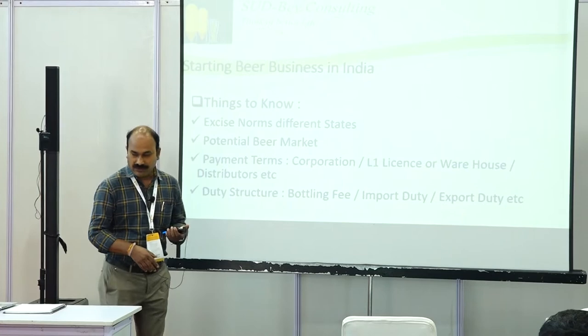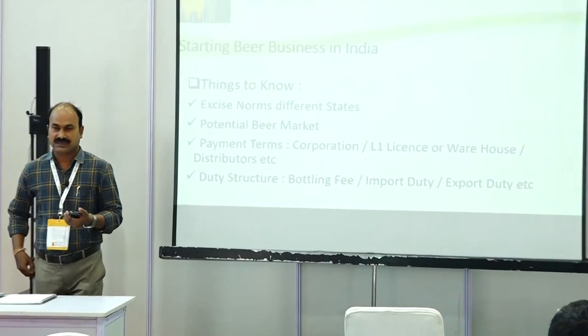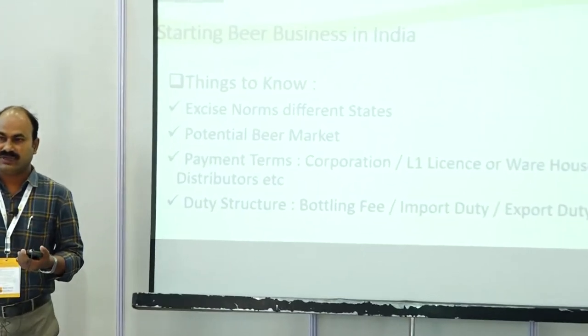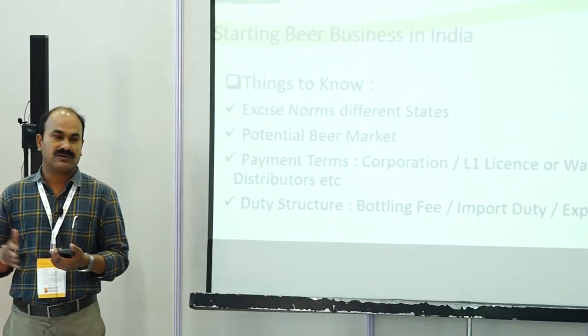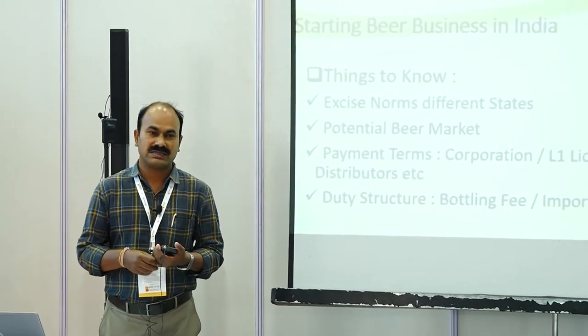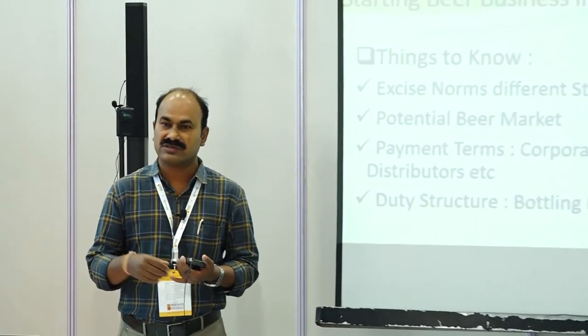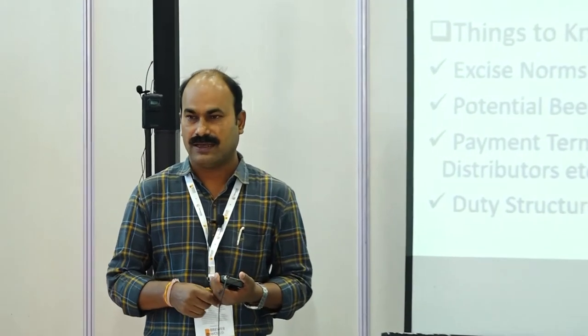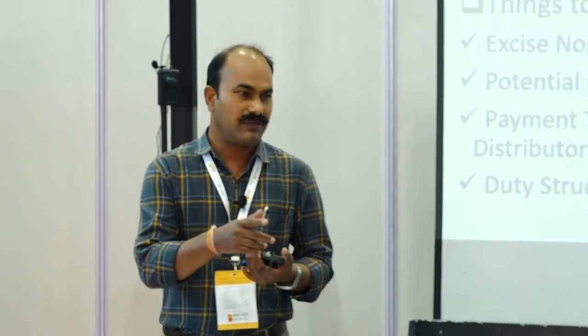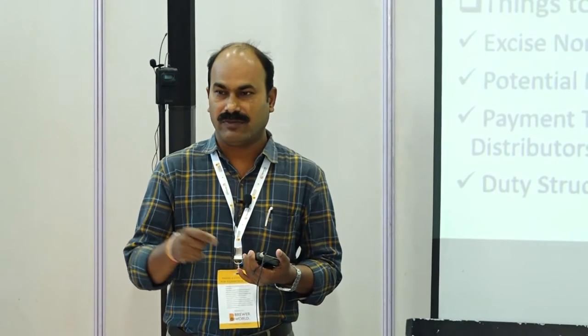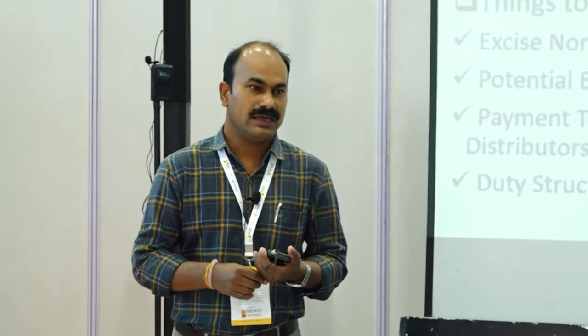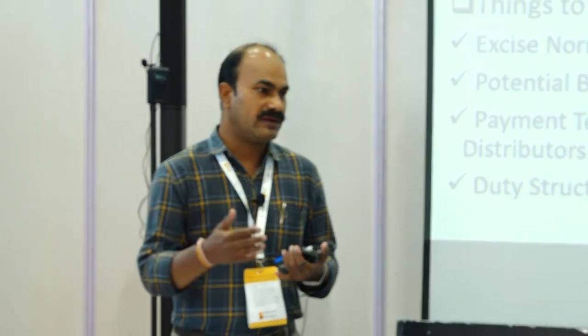Duty structure varies from state to state. For example, in certain states, bottling fees are applicable — if you bottle beer you need to pay a bottling fee calculated in terms of bulk liters, which is called per beer calculation.